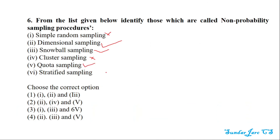Stratified sampling is not in the non-probability sampling list. So the correct non-probability sampling methods from the list are options 2, 3, and 5. Therefore, option 4 is the correct answer.